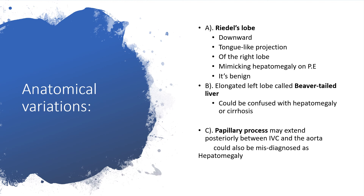Before diving into various pathological conditions, we should remind ourselves of anatomical variations that could present as hepatomegaly. One is Riedel's lobe — a downward tongue-like projection of the right lobe, making hepatomegaly on physical examination, but the good news is it is benign. We could also find beaver tail liver, which is an elongated left lobe that could be confused with hepatomegaly or cirrhosis. It is also possible to have a papillary process that may extend posteriorly between the inferior vena cava and the aorta, and could be misdiagnosed as hepatomegaly.